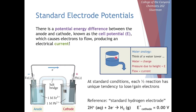Water flows from high places down to low places — from high to low due to gravity, due to a difference in height, due to a difference in potential energy based on its position. We can have a flow of water from high potential energy to low potential energy. Electrons in our voltaic cells will do the same thing, with charge flowing from places of high electrical potential to lower electrical potential, causing an electrical current.